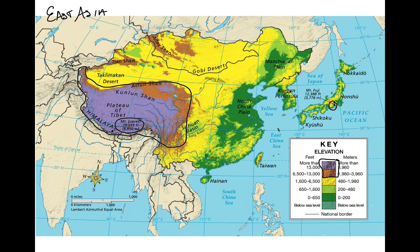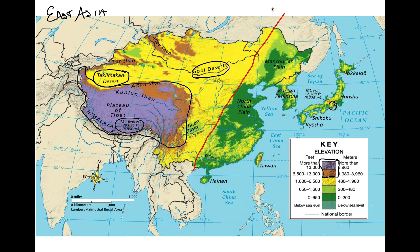Speaking of great places not to live, there's the deserts. We've got the Gobi Desert, which is in part of China and also part of Mongolia, and then the Taklamakan Desert as well. These areas are hot, dry, and arid, so not a lot of farming can happen there. From our population density map, most of the people in China and East Asia live towards the coasts — most of them would live in this direction.